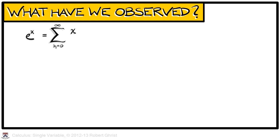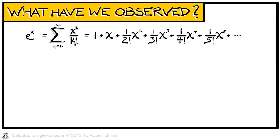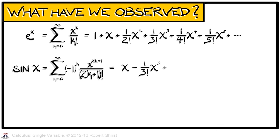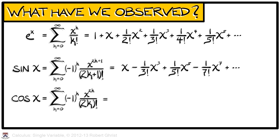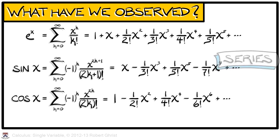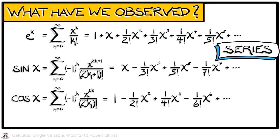In our last lesson, we began with the definition of e to the x as something like a long polynomial. And from that, and a little bit of help from Euler's formula, we observed similar formulae or expressions for the basic trigonometric functions, sine and cosine. Expressions of this form we are going to call series, and we will be working with them throughout this course.